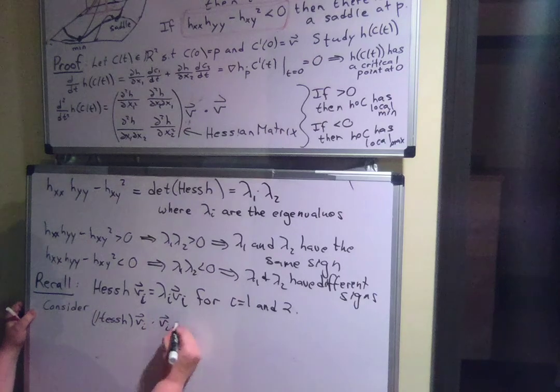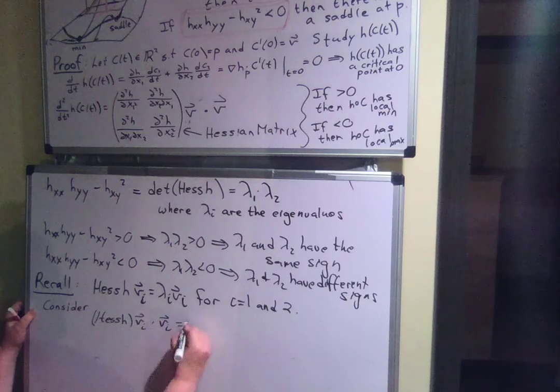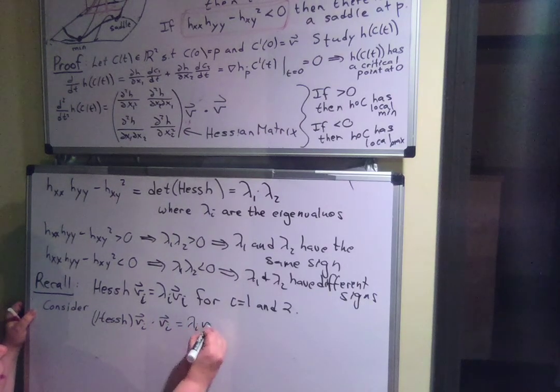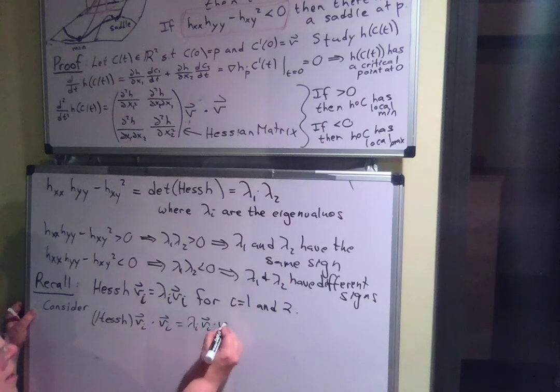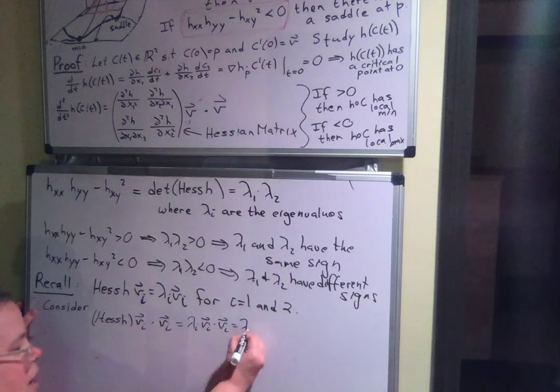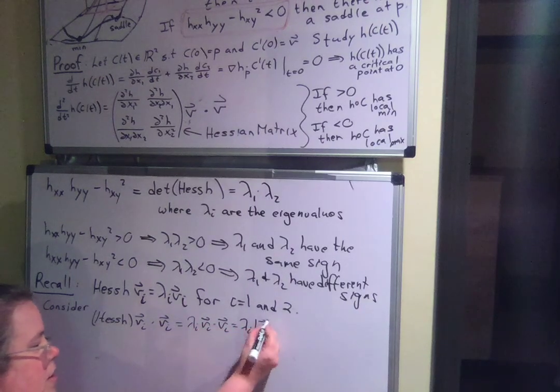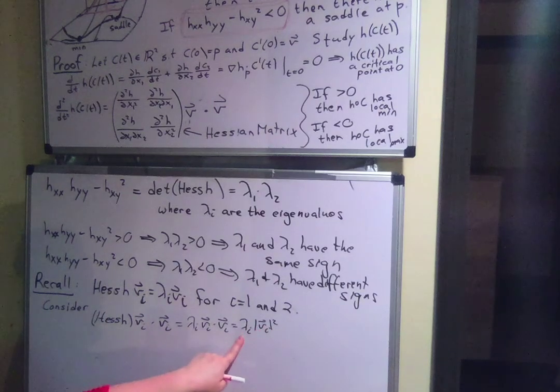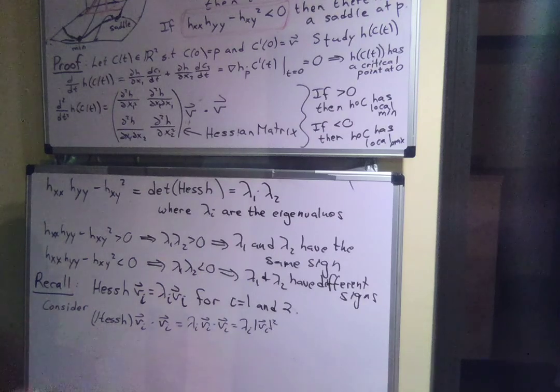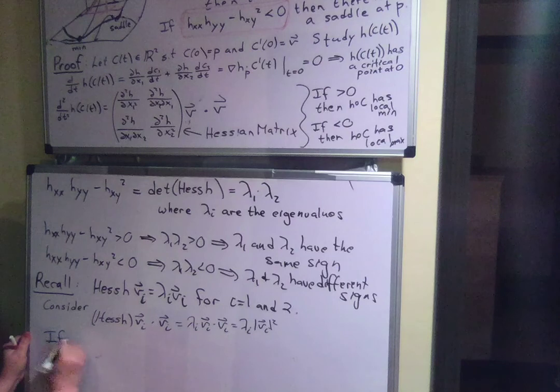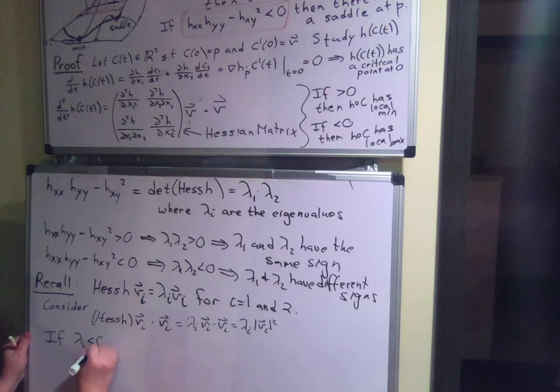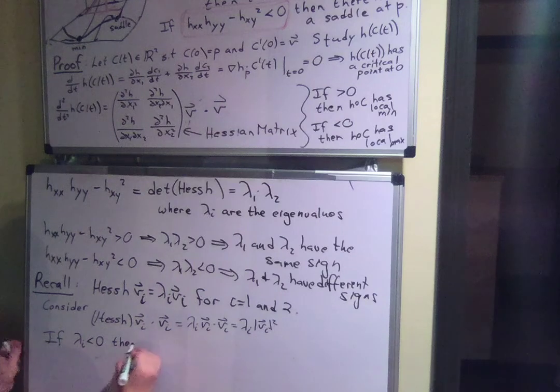And what do you get? This is equal to lambda i v i dotted with v i, which is equal to lambda i times the length of v i squared. So if an eigenvalue is negative, then that curve has, so if lambda i is less than 0, then the curve in that direction has a local max.